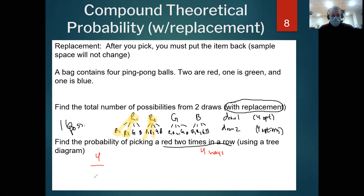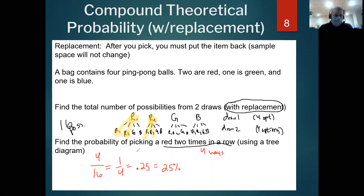So we'd call that a 4/16 chance, which of course reduces to 1/4, which equals 0.25, or 25%.